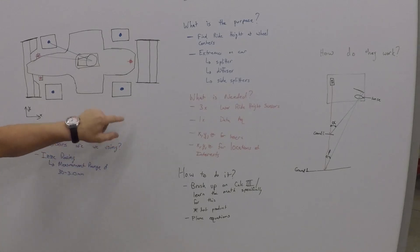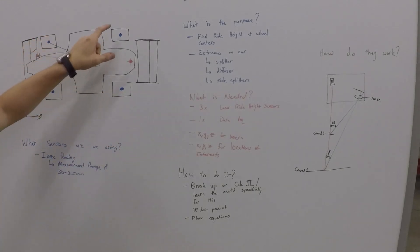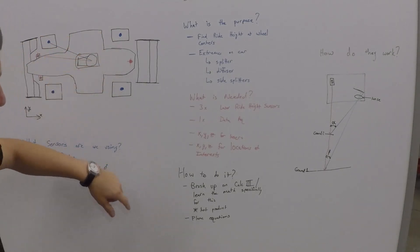So usually for right now, positions of interest is front left, front right, rear right, rear left ride height sensors. Or rear right height, not sensors.